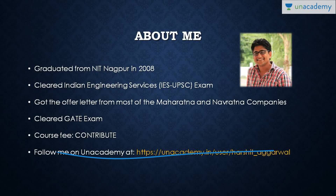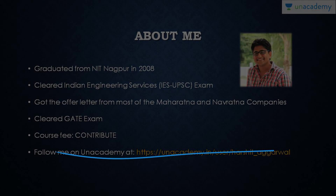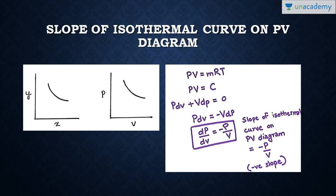This lesson is very short — I just want to tell you how to draw the isothermal and adiabatic curves on a PV diagram. To start with the slope of the isothermal curve on a PV diagram: we know the ideal gas equation is PV = MRT. Since M and R are constants, and for an isothermal process temperature is also constant, the equation becomes PV = constant.